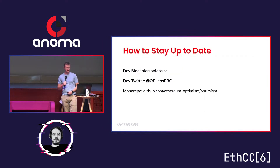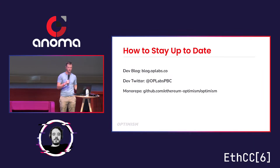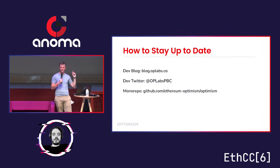To keep up to date with everything: the two places with the most digestible information are our dev blog and OP Labs Twitter. We're talking a lot about this and will have more information coming out about the dispute game as we reach more milestones. If you're interested in the technical details, everything is public on GitHub: github.com/ethereum-optimism/optimism — that's our primary repository, where Canon is, where the Challenger is, where our fault game contracts are. We're working in public, so if you want to follow along or help out, we're always happy.